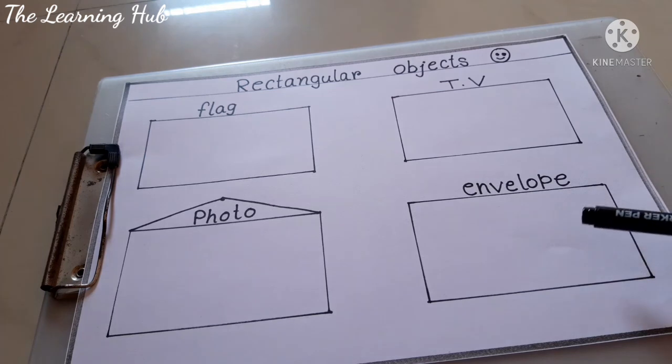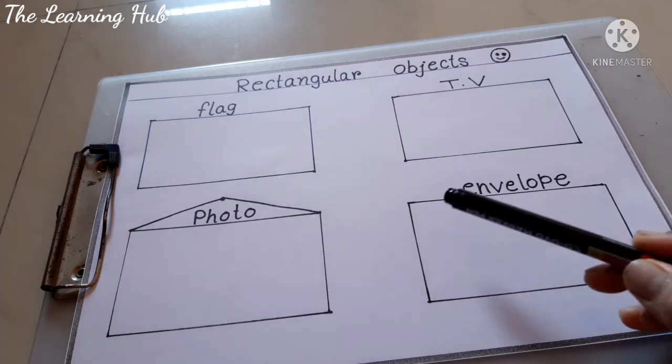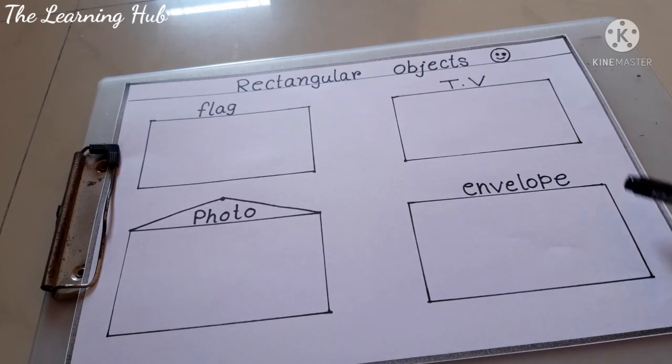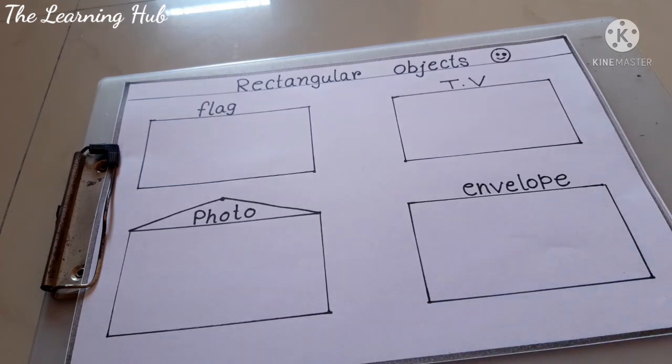Rectangle shape — everyone repeat after me: rectangle shape! Now we will go to the activity. I know you all like to draw different pictures and figures, so now we are going to draw different pictures with the help of rectangle shape. Everyone look here — these are all rectangle shapes. Observe very carefully: there are two long sides and two short sides.